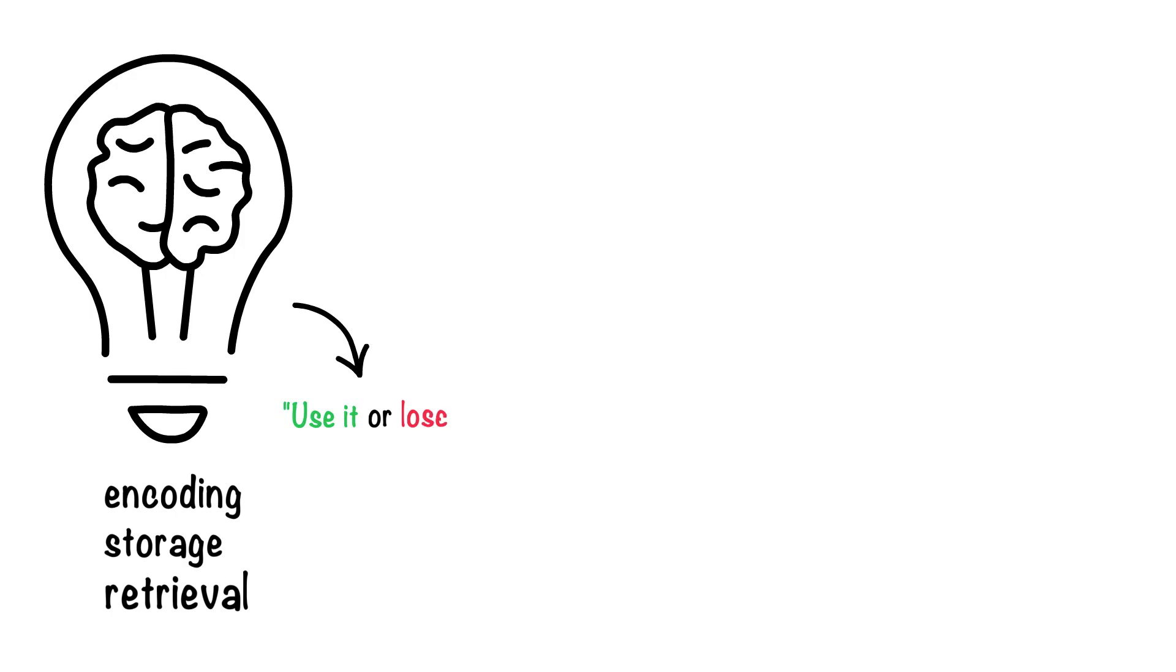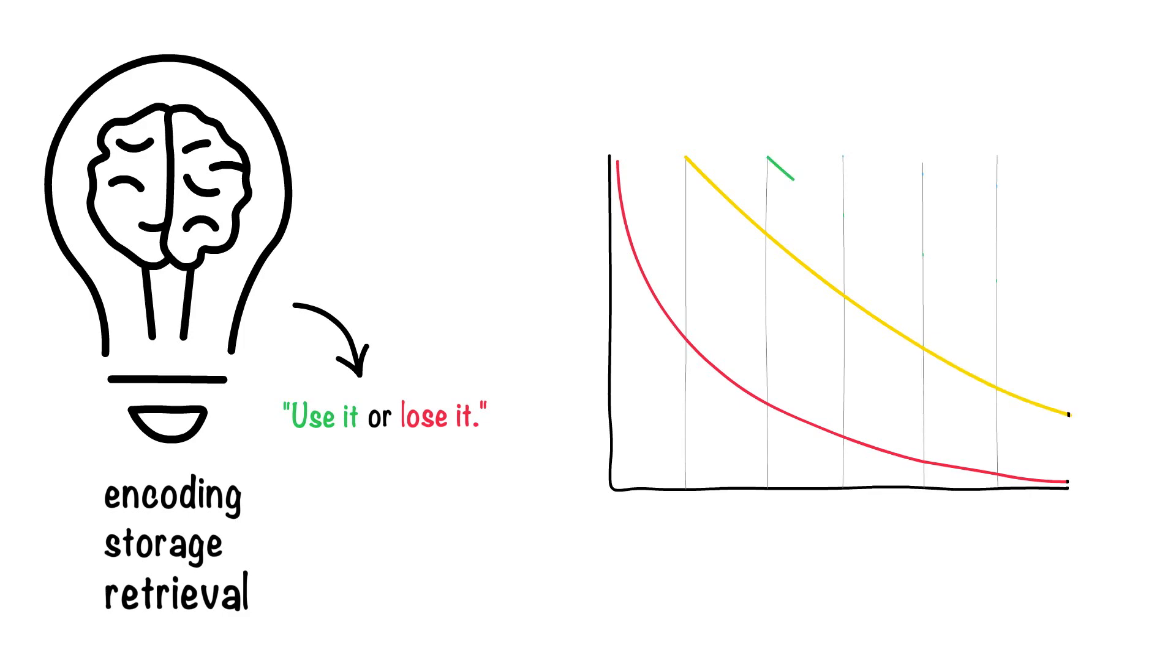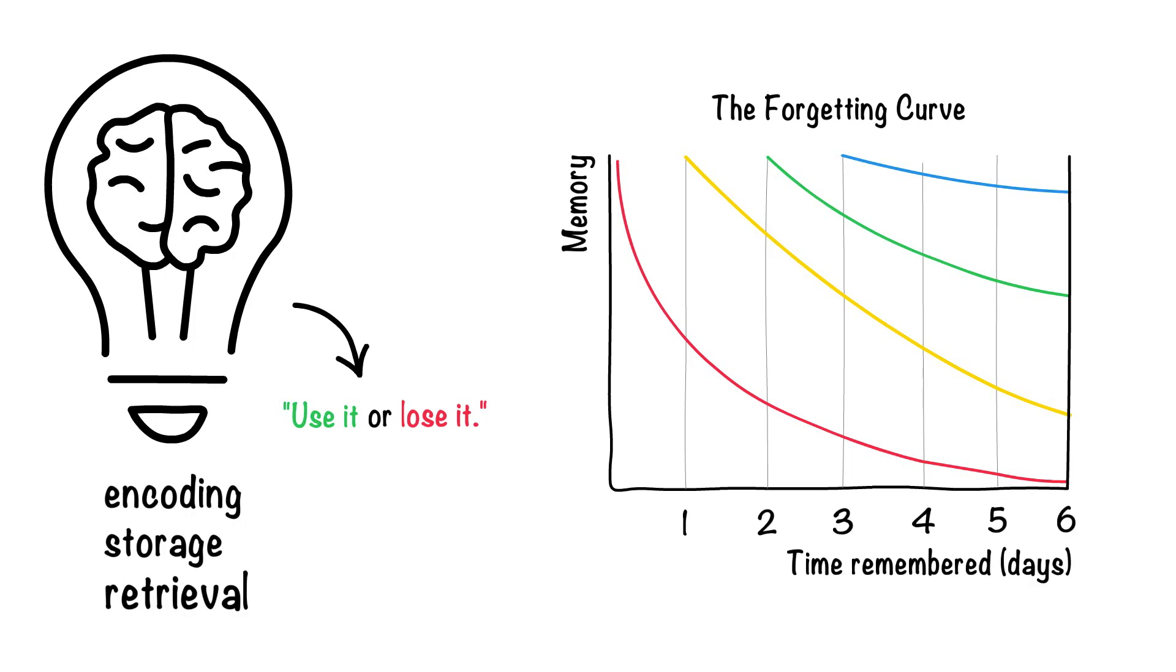We use our memories by recalling, recognizing, or relearning information, but we also have to contend with the forgetting curve, as coined by Ebbinghaus, which documents the rate of memory decay without further rehearsal.